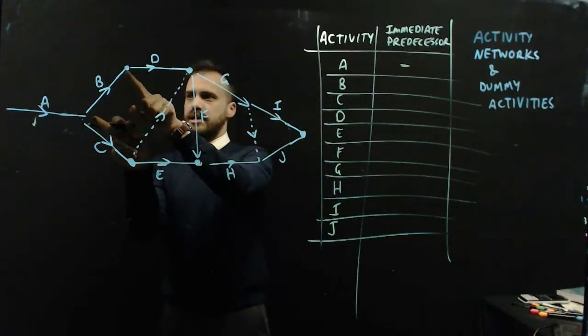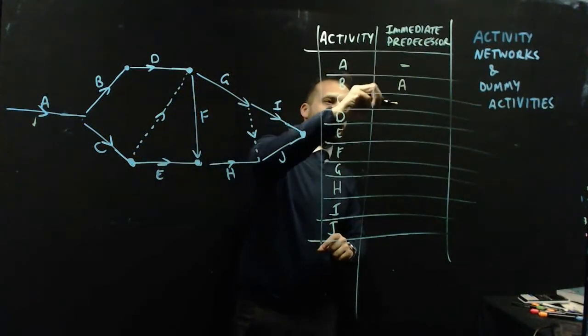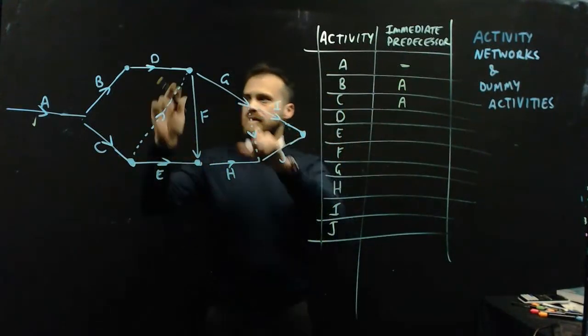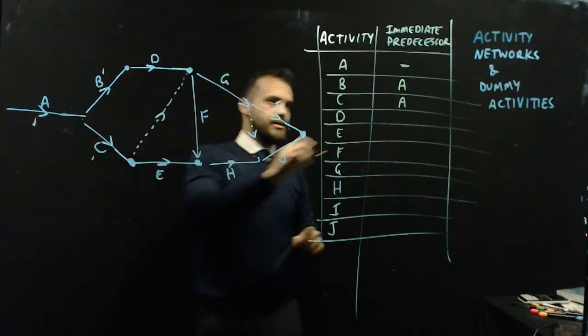What about B? B has an immediate predecessor of A and so does C. So B and C both have immediate predecessors. Easy. I've done B. I've done C. D has an immediate predecessor of B. Done.